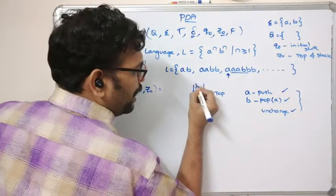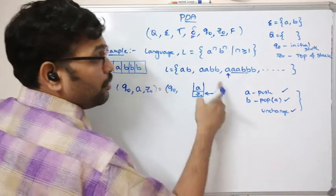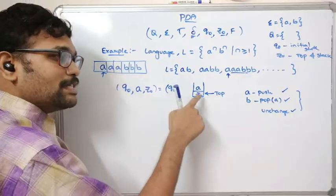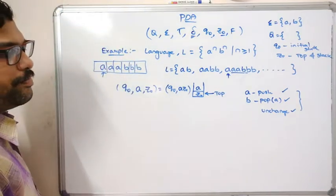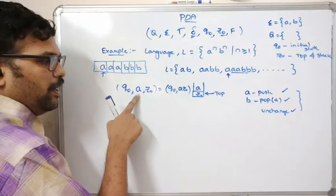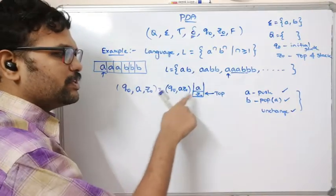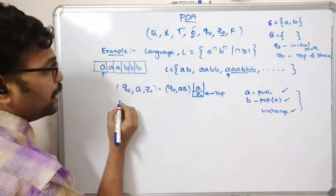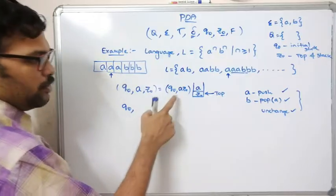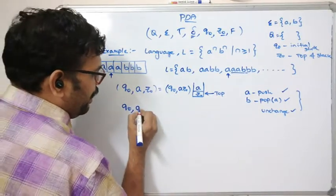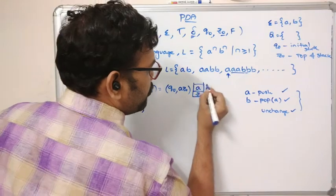After the operation, z₀ and 'a' are in the stack. The string of stack symbols available is 'az₀'. So the transition is: δ(q₀, a, z₀) = (q₀, az₀). Now for the second input 'a', the state remains q₀ and the top of the stack is now 'a'.